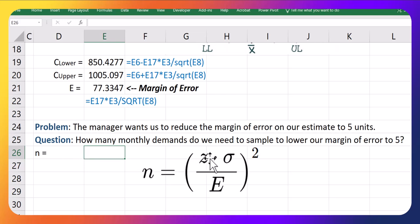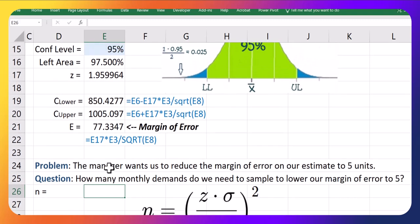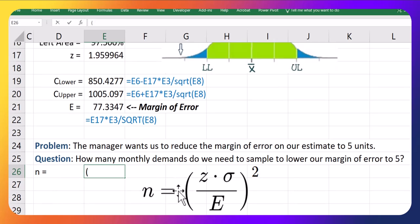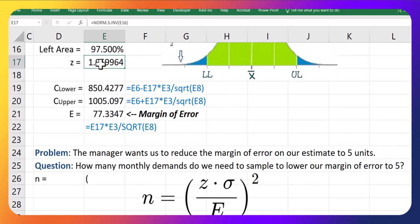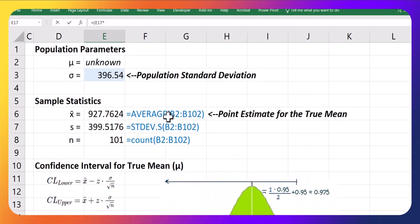So to solve for n, we take our z-score, which we have from before, put a bracket around that first, and then take that z-score of 1.95 times by our population standard deviation. That's all the way at the top of this spreadsheet. There it is.